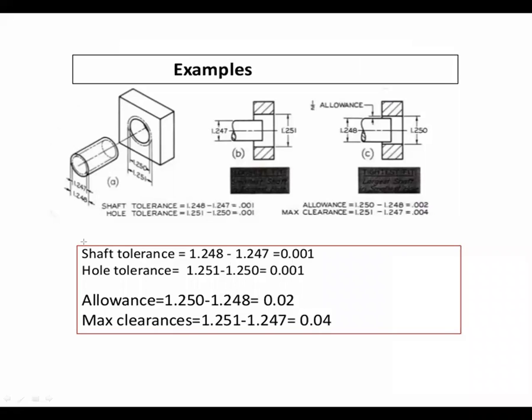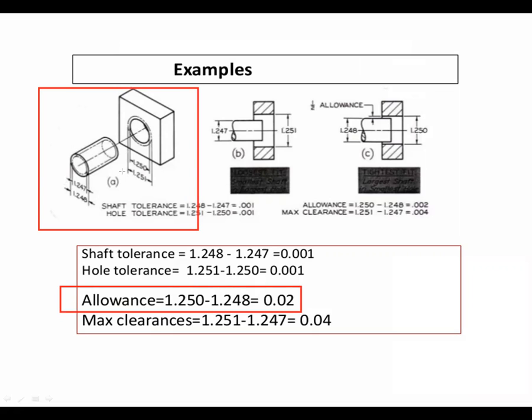Now see the example of how to calculate allowances. Here allowance is calculated from the above diagram. In this diagram, 1.250 is the dimension of the hole, and 1.280 is the dimension of the shaft. Where exactly the shaft is going to insert into the hole, that is the difference, what we studied as the difference between the hole and shaft.